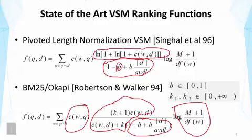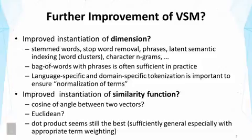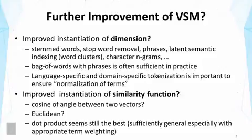After going through all this analysis, we have in the end reached basically the state-of-the-art retrieval functions. So far we have talked mainly about how to place the document vector in the vector space, which plays an important role in determining the effectiveness of the retrieval function. But there are also other dimensions we did not examine in detail. For example, can we further improve the instantiation of the dimensions of the vector space model? We've assumed a bag-of-words representation, where each dimension is a word, but obviously we can consider many other choices.